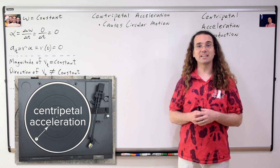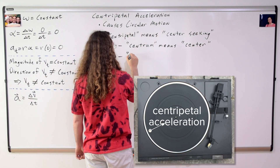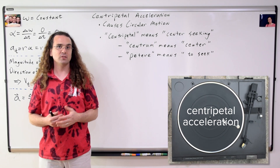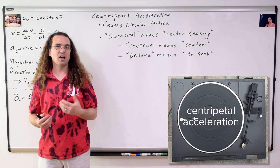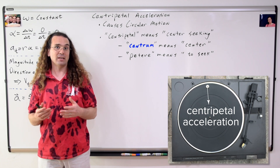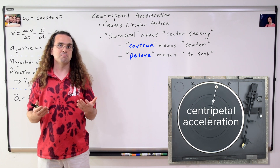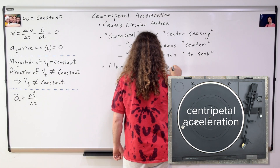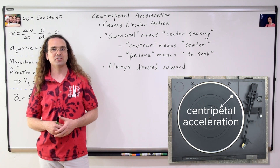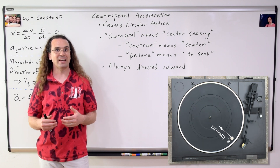Centripetal acceleration is the acceleration that causes circular motion. The term centripetal was coined by Sir Isaac Newton and is a combination of the Latin words centrum, which means center, and petra, which means to seek. So centripetal literally means center-seeking. The centripetal acceleration is the center-seeking linear acceleration which is always directed inward.